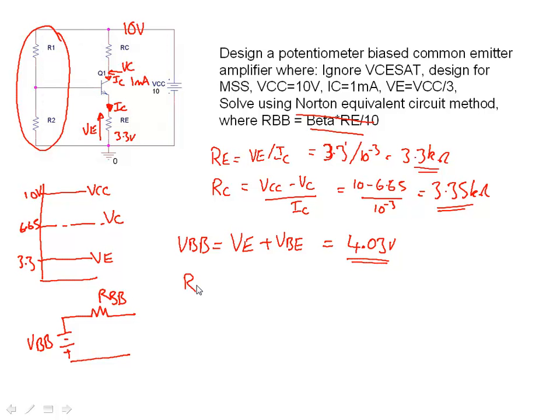And RBB, the base resistance, is equal to, well if I'm sat at the base here and I look that way, I see R2 connected to ground. Because the power supply is DC, it's a short circuit, it's a low impedance, so in effect R1 looks like it is connected to ground. So RBB looks like R1 R2 over R1 plus R2, the parallel components of those two designs.